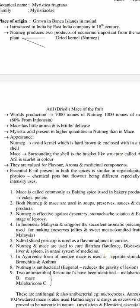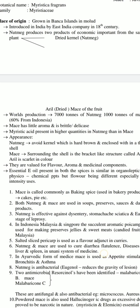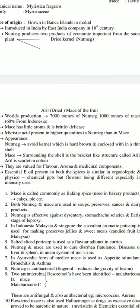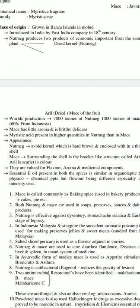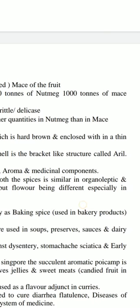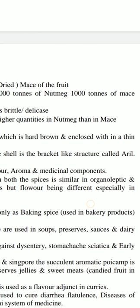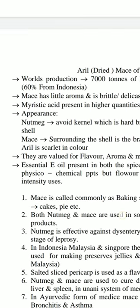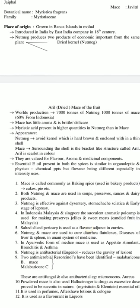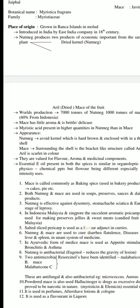The appearance of nutmeg: it is an ovoid kernel which is hard and brown, enclosed like a stone within a thin shell. Mace surrounds the shell — it is a bracket-like structure surrounding the shell of nutmeg, called the aril, and it is scarlet in colour, as seen in the first slide.